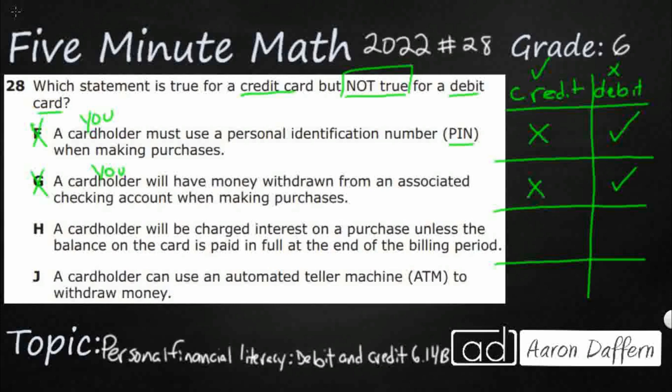Option H: a cardholder will be charged interest on a purchase unless the balance on the card is paid in full at the end of the billing period. With a debit card there's no interest, because that balance is immediately paid — it goes straight from your checking account to the store. But with a credit card, the credit card pays the store and you pay them back. As long as you pay by the end of the billing period, you're fine. But if you buy a $500 TV and only pay $200, they carry over the remaining $300 to the next month and charge you interest. That's where they get their money.